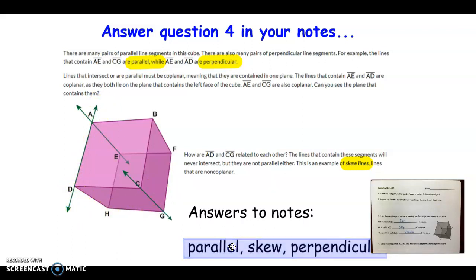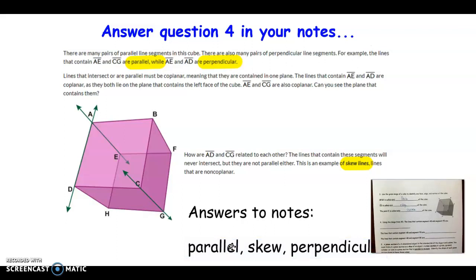So in your notes on question 4, it says, Using the image, the lines that contain segment AB and segment FE are parallel. So we have AB is here, FE is here. So they're on that same top plane and they would never intersect. The lines that contain segment AB and FG, AB and FG would also never intersect, but they are not in the same plane. So those are called skew lines or segments. And then the last one, the lines that contain segment AB and BC, since they intersect to form a right angle, are perpendicular.